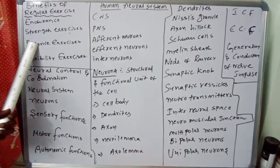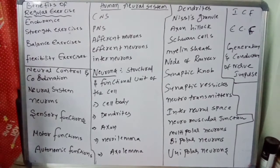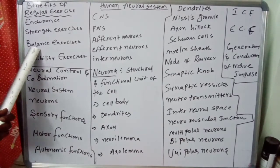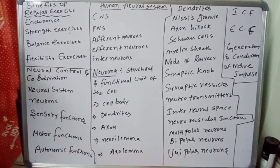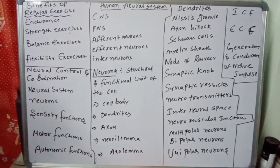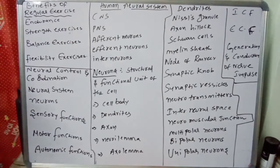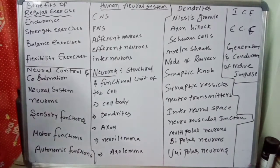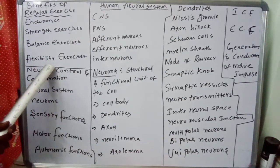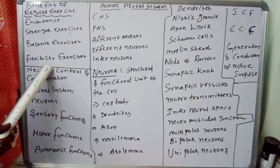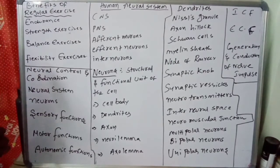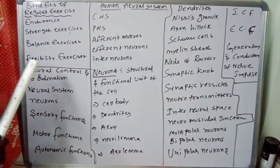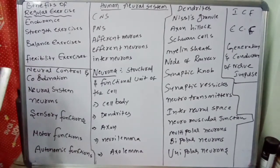Balance exercises help to prevent falls, which is a common problem in older adults. Many strengthening exercises also improve balance. Flexibility exercises help to stretch the body muscles for more freedom of joint movement.